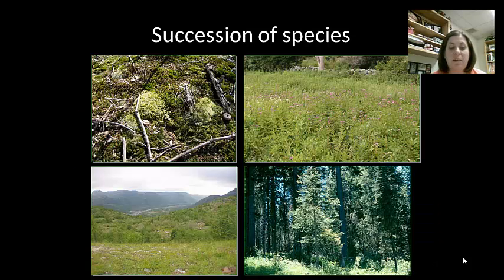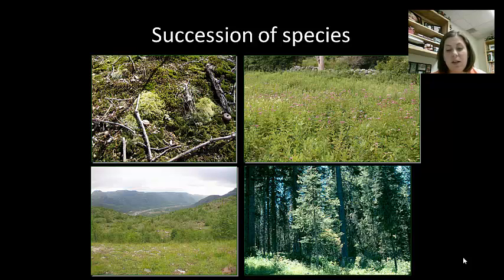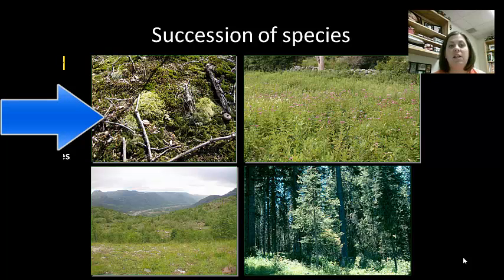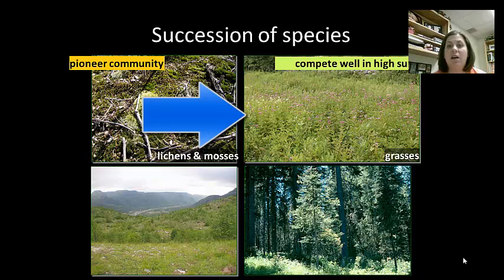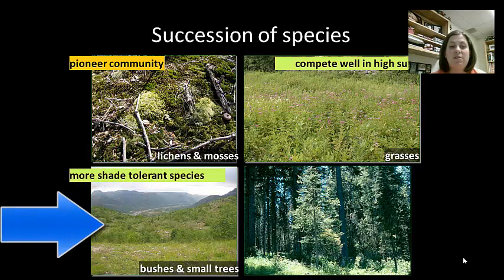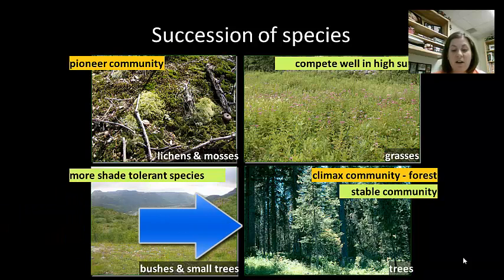A community can be described by its level of maturity. Pioneer communities are developing communities, which is the beginning of primary and secondary succession. These are harsh environments with low species diversity and low stability. Lichens and mosses are your basics. Then when you see grasses start to move in, they're going to compete well for the high amounts of sunlight that are there. Then of course we have bushes and small trees providing more shade, so we need species that can tolerate the shade.